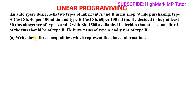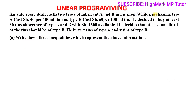For part A of the question, write down three inequalities which represent the above information. We are told that type A costs 40 shillings per tin and type B costs 60 shillings per tin, with X tins of type A and Y tins of type B, and 1500 shillings available. That information helps us form the first inequality. The cost of type A tins is 40 times X, giving a total of 40x.